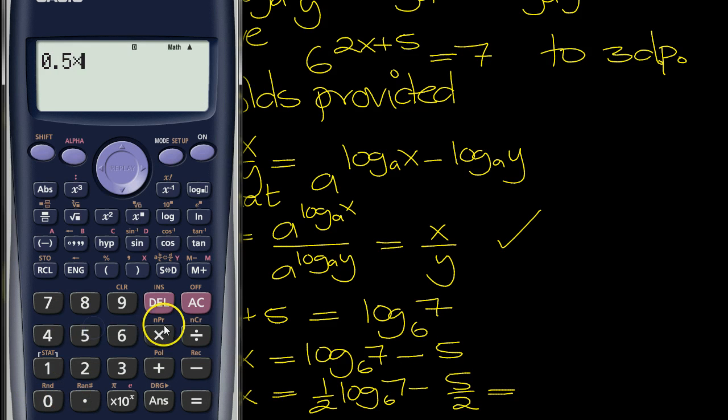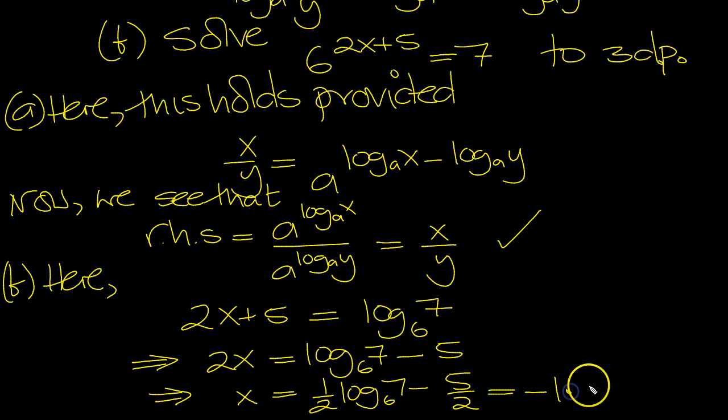Half, 0.5 times log of base 6 of the number 7 minus the 5 over 2, and we can just do 2.5, can't we, 5 over 2. 3dp minus 1.9569, 957, minus 1.957, and that was the 3 decimal places.